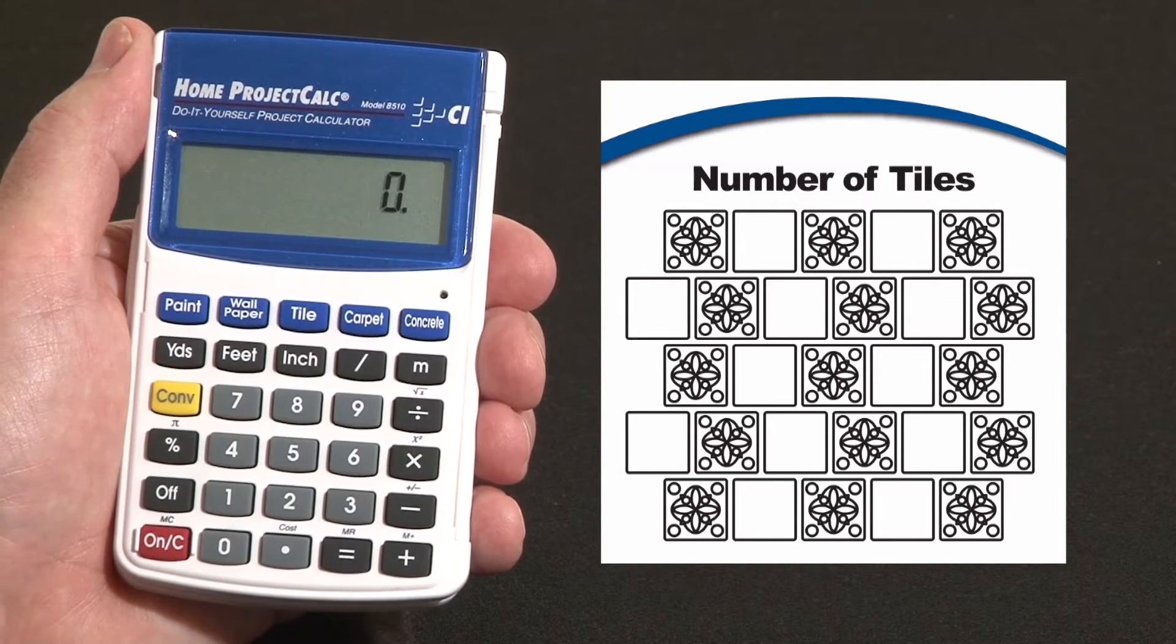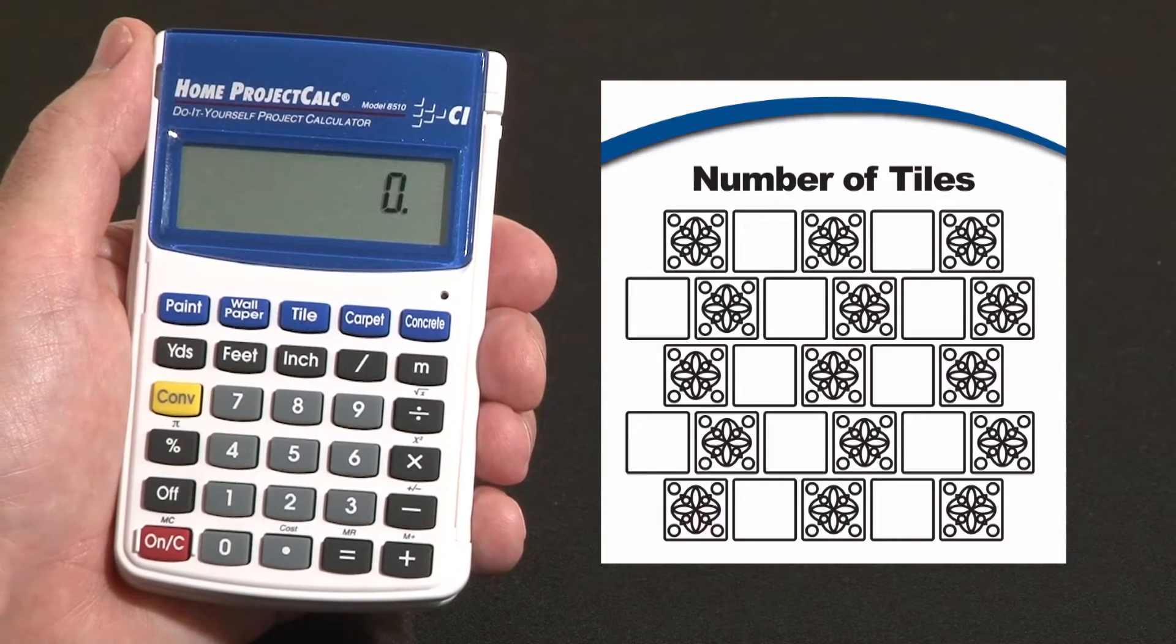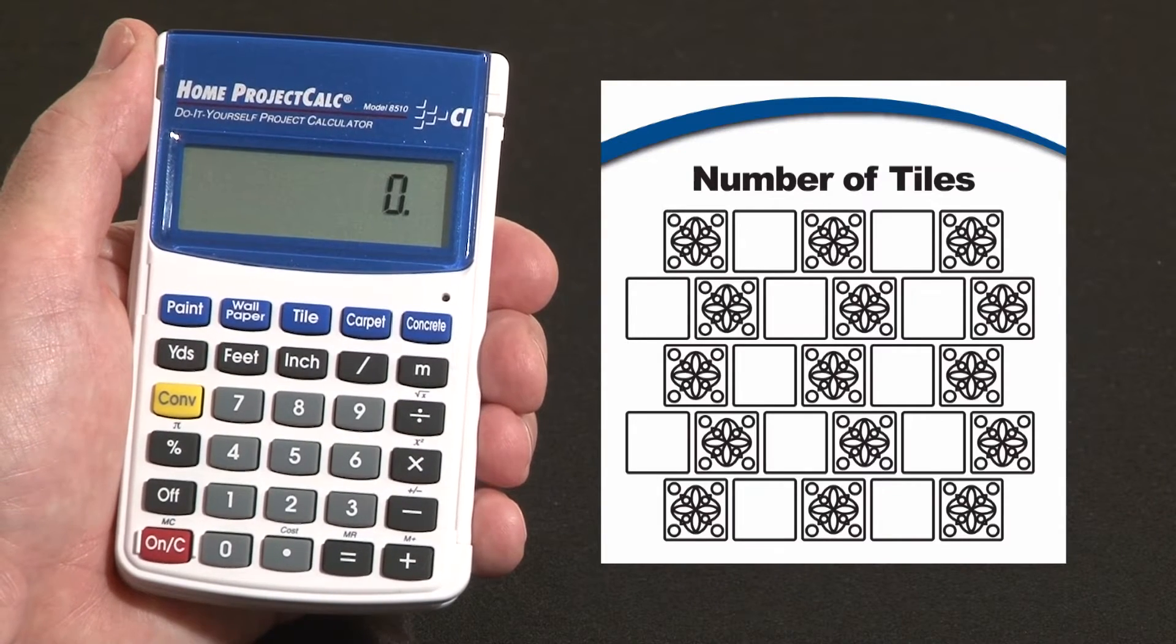Floors, counters, backsplashes, showers. You just enter the square footage and it will tell you how many tiles you need in any of 11 built-in sizes.